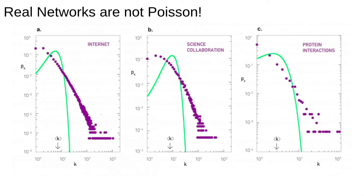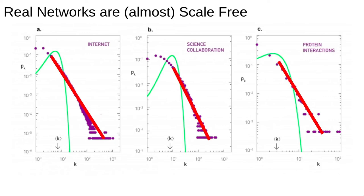For example, in the internet network, the Poisson model predicts basically a zero probability to observe nodes with degree greater than 100, yet we see many nodes with degree 100 or even 1000. Clearly this model is not working. Figuring out why tells us something very important about real networks.